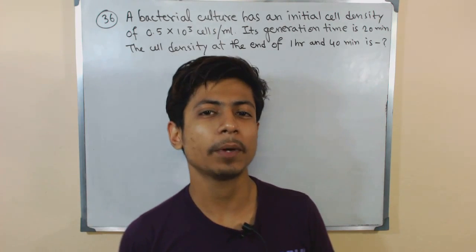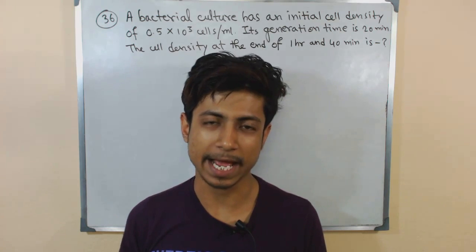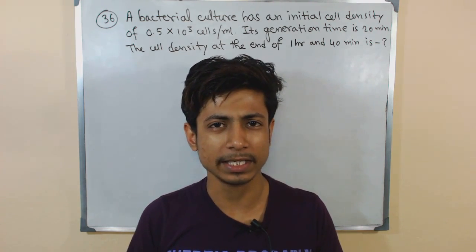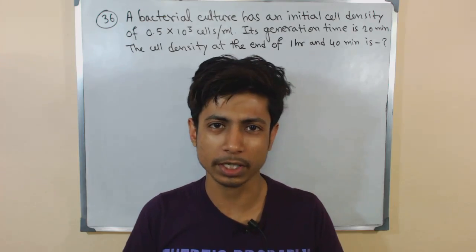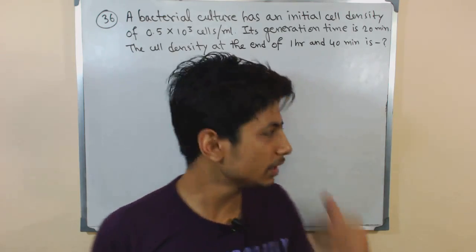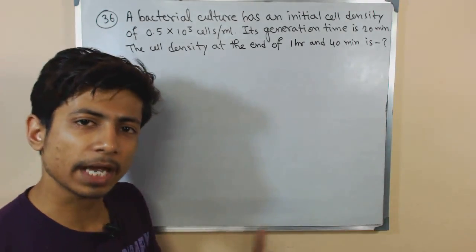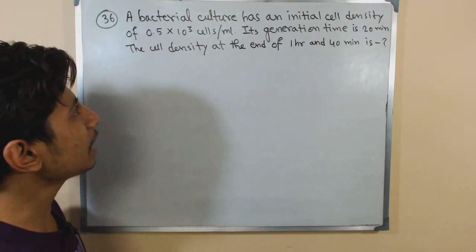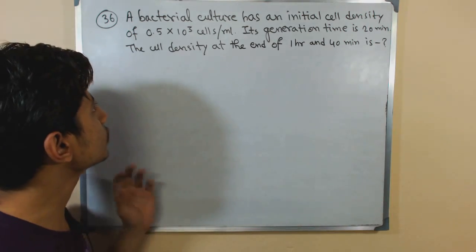Welcome again guys, we are talking about different biology math problems and we have been doing several problems around bacterial division and bacterial population and growth-related problems. Now in this video we will be talking about another bacterial-related problem. A bacterial culture has an initial cell density of 0